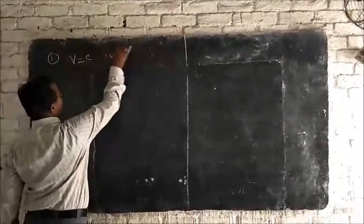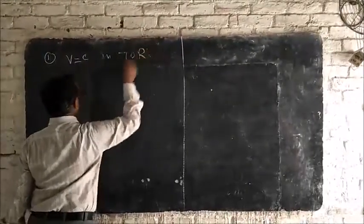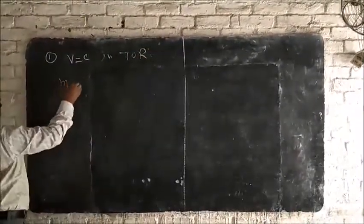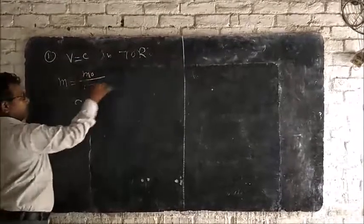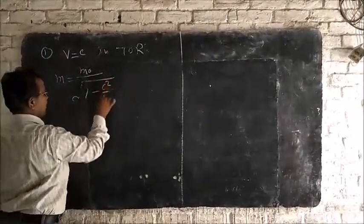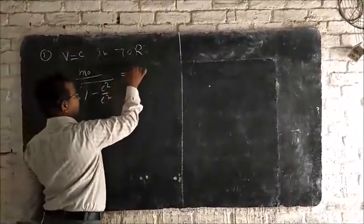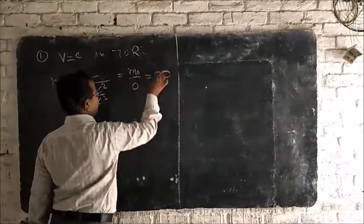Put in theory of relativity, we get the moving mass equal to rest mass upon 1 minus C square upon C square, that is rest mass upon 0 equal to infinite.